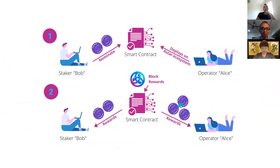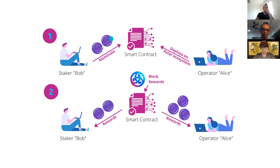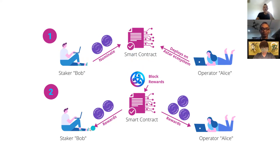Another question was about dApp staking. This image explains how dApp staking works in a simplified way. We have the operator, which is the developer — they deploy a smart contract on the Astar ecosystem or Shiden. Then you as a user can use your Shiden tokens, your SDN tokens, and nominate that smart contract. With the block rewards, the developer will earn some native tokens and you as the staker will also get rewards for staking on that smart contract.